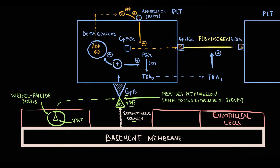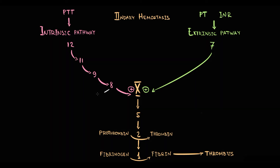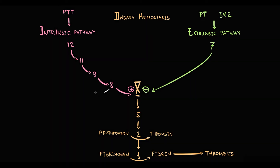In terms of von Willebrand disease, we have to know an additional von Willebrand factor function. It turns out that von Willebrand factor also participates in secondary hemostasis: it serves as a carrier for factor 8. Because factor 8 cannot exist in the circulation by itself, it requires a protein that can stabilize it, and this protein is von Willebrand factor.